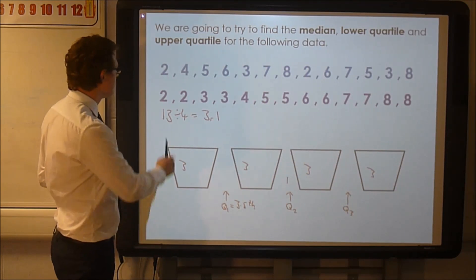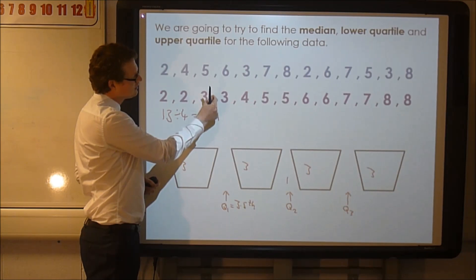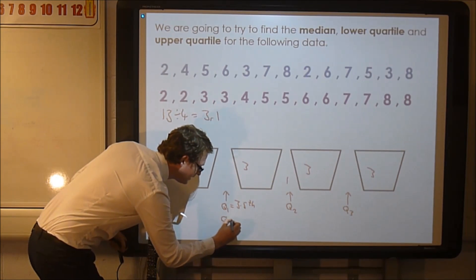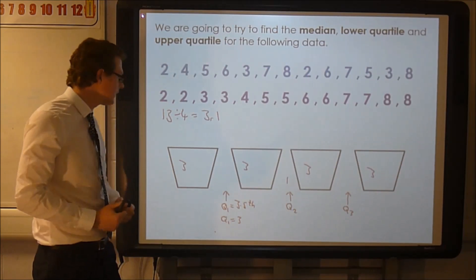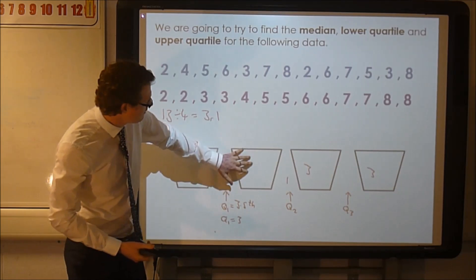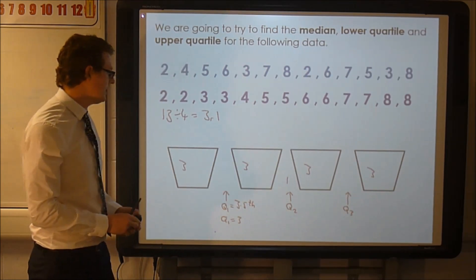Well I can probably find that. One, two, third value and the fourth value. So in between there. Well between three and three, well we'll go for three. So Q1 is three. The lower quartile's three. So the median's a bit easier. We've got three bits, three more, so that's six. The seventh number is the median.